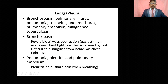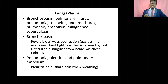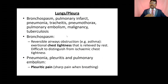Lung and pleura differential: causes include bronchospasm (irreversible airway obstruction in asthma), pulmonary infarction, pneumonia, tracheitis, pneumothorax, pulmonary embolism, malignancy, and tuberculosis. Bronchospasm and exertional chest tightness are relieved by rest. Pneumonia and pleuritis typically present as sharp chest pain. These are differentiated from cardiogenic chest pain by the absence of central radiation and associated respiratory symptoms.